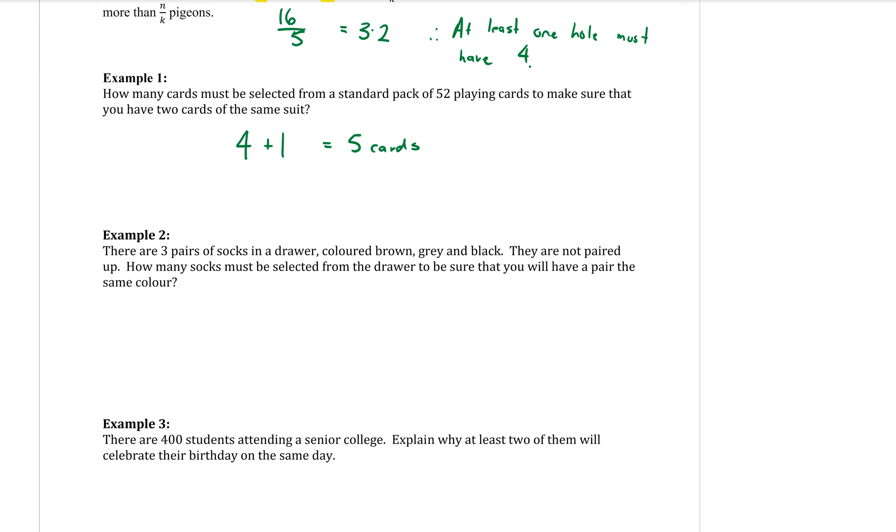Question two is similar. There are three pairs of socks in a drawer, colored brown, grey, and black. They are not paired up. How many socks must be selected from the drawer, you're not looking, you're randomly selecting, to make sure that you will have a pair of socks the same colour.